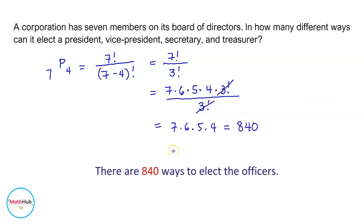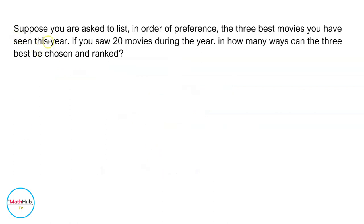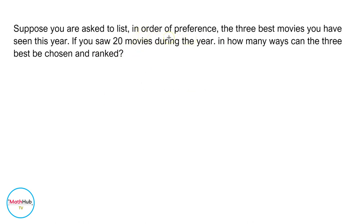There are 840 ways to do this. Suppose you are asked to list in order of preference the three best movies you have seen this year. If you saw 20 movies during the year, in how many ways can the three best be chosen and ranked? Notice that the order here is important, so therefore this is a problem on permutation.